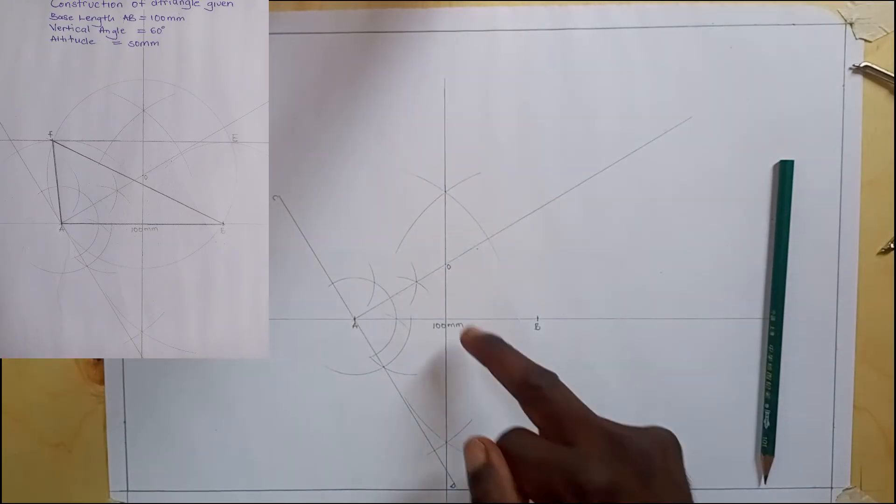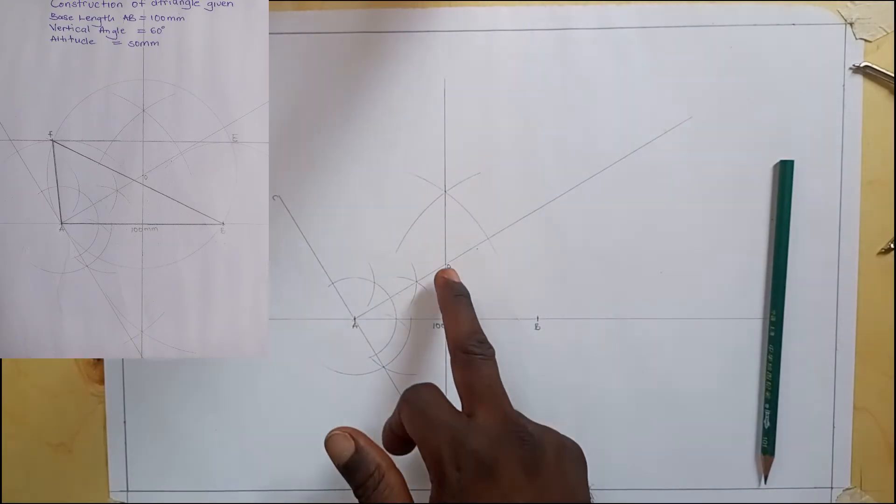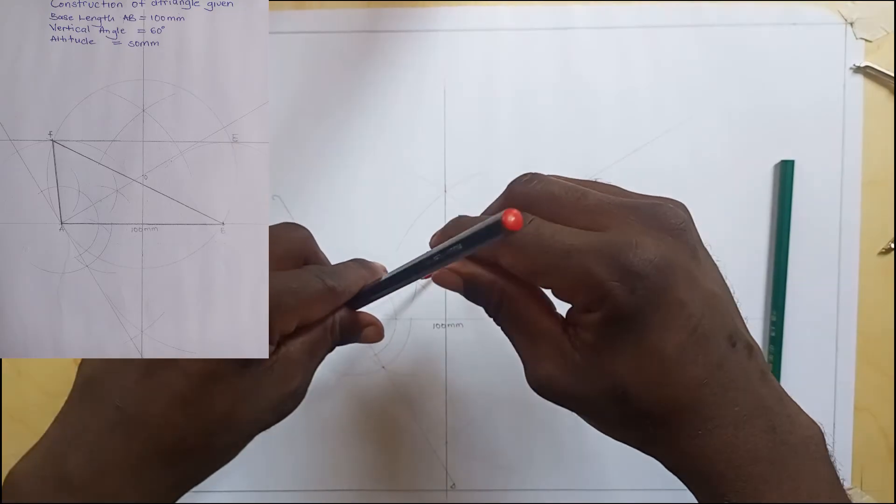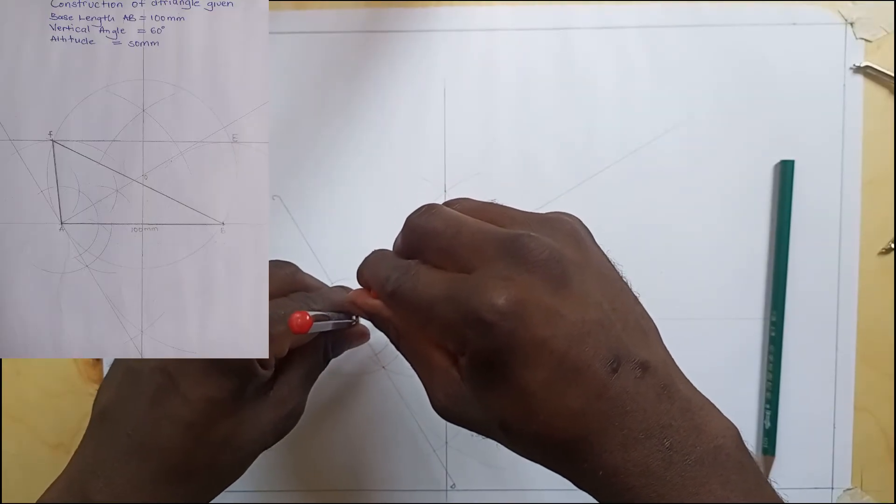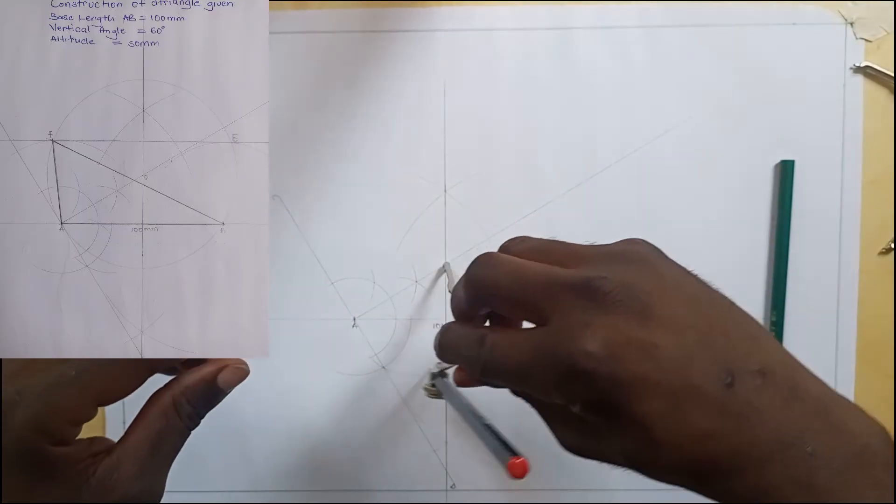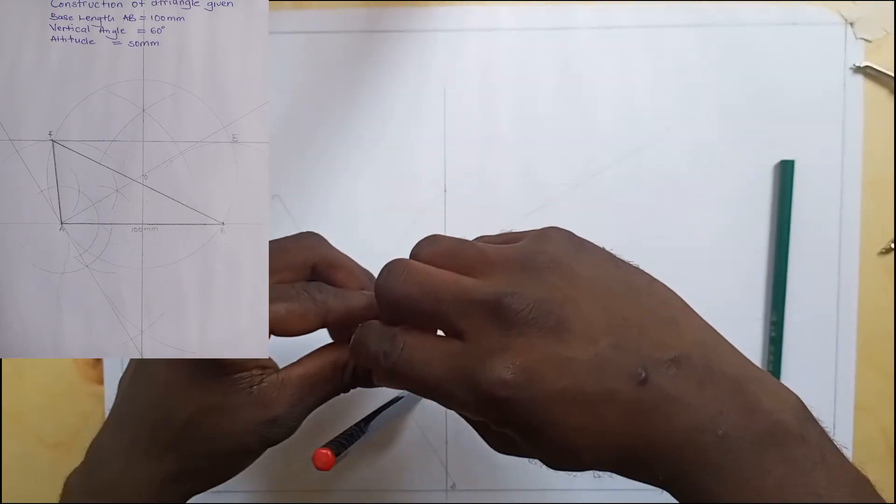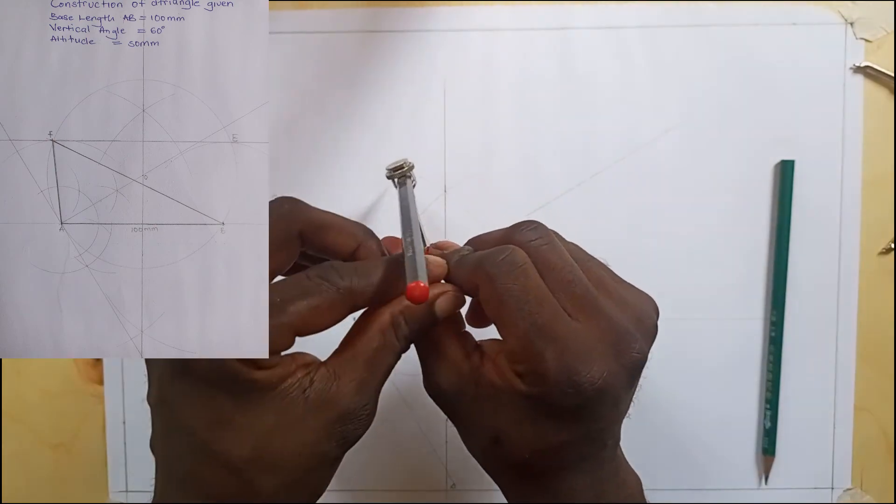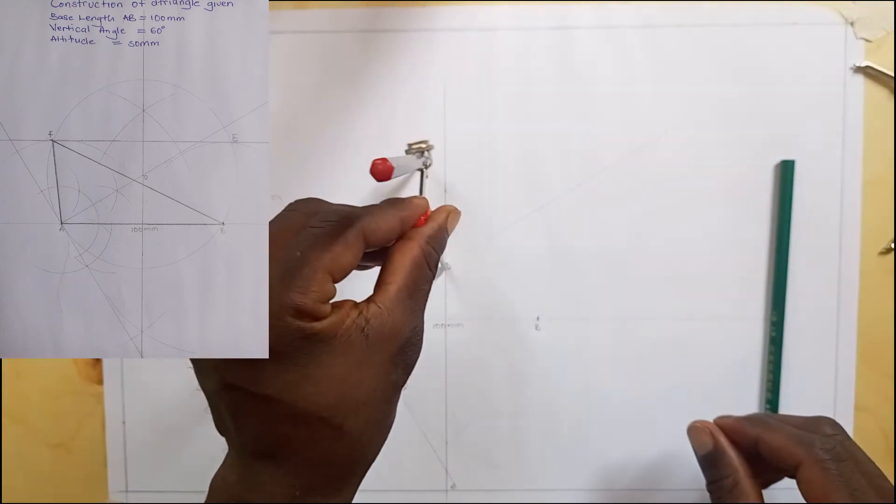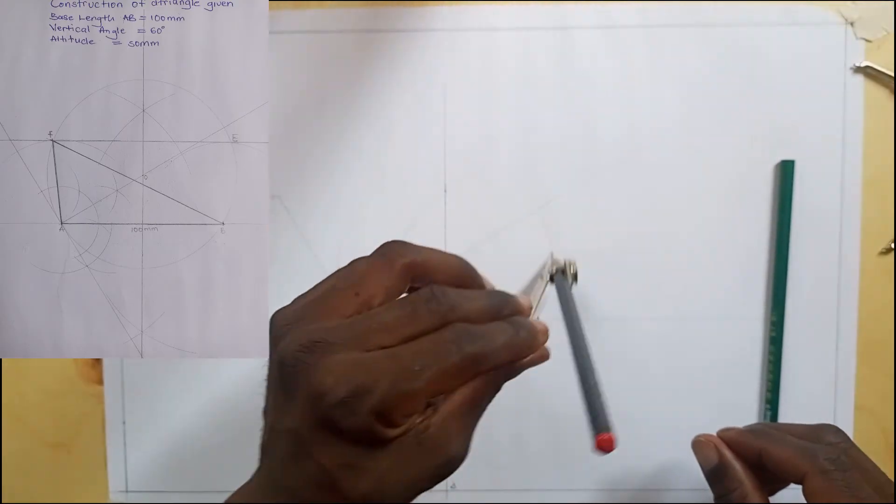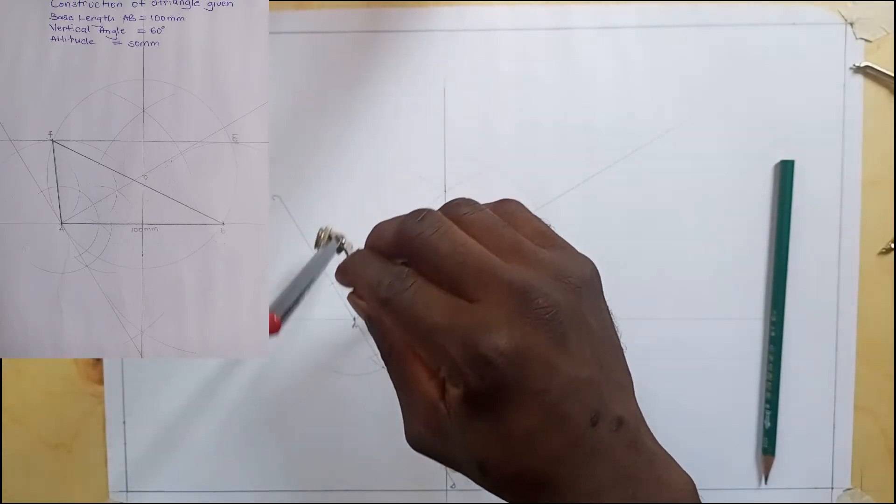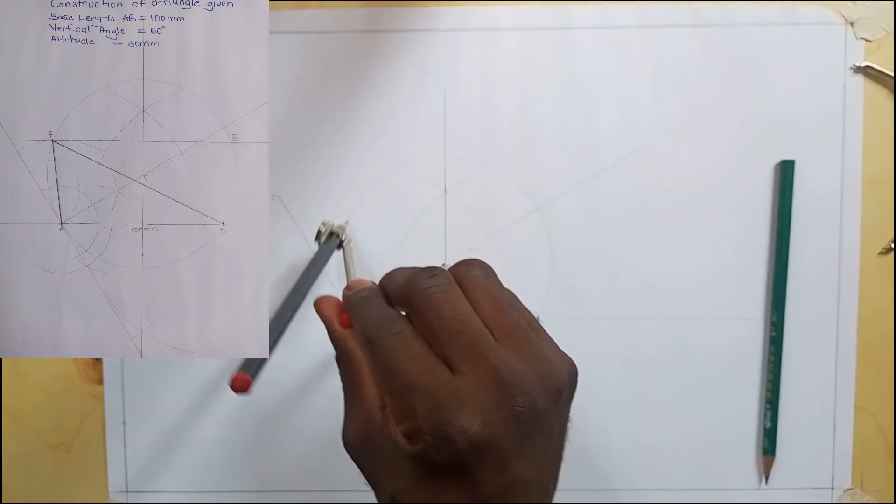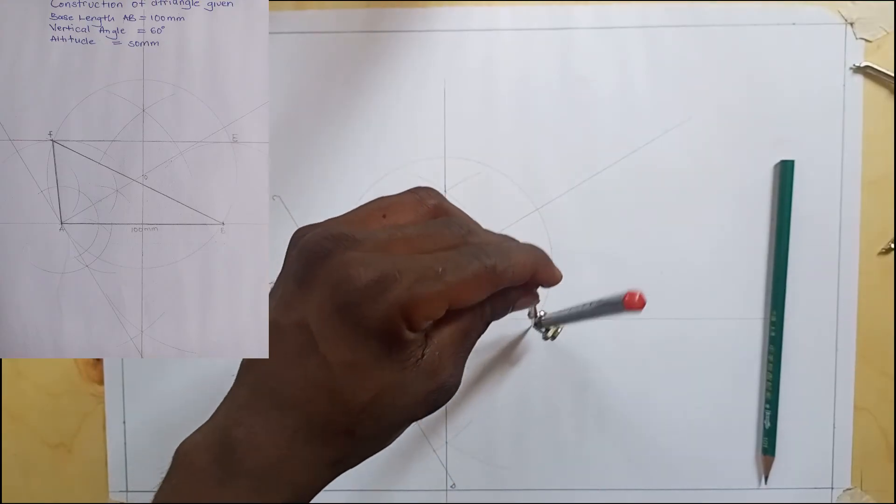Using OA as the radius, or OB as the radius, I'm going to draw the circle.